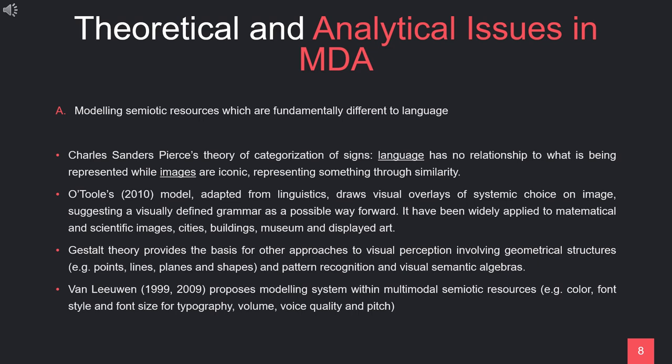Gestalt theory provides the basis for other approaches to visual perception involving geometrical structures such as points, lines, planes, and shapes, pattern recognition, and visual semantic algebra. The principle of Gestalt theory arises originally from psychology, describing the way humans see objects by grouping similar elements, recognizing patterns, and simplifying complex images. Another theory is by Van Leeuwen, 1999 and 2009, which proposes modeling systems within multimodal semiotic resources, for example, color, font style, and font size for typography, as well as volume, voice quality, and pitch.